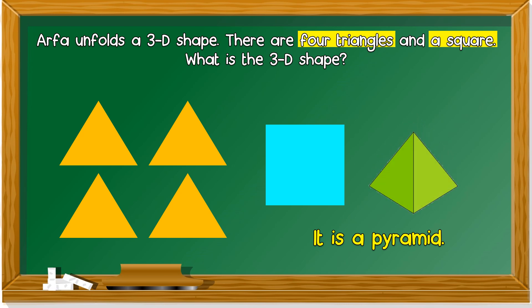Okay, a pyramid has 4 triangles: 1, 2, another side here - 3, another here - 4. Then the bottom, this bottom, is a square. So it's a pyramid.